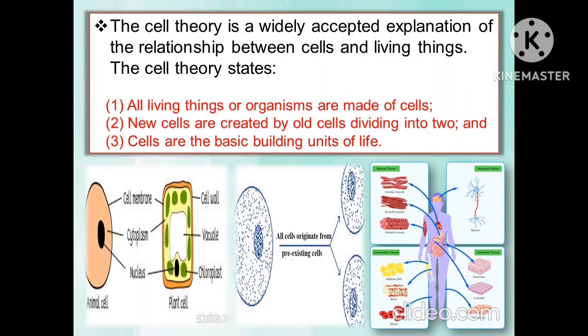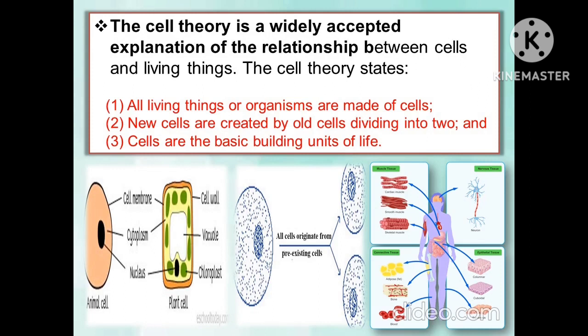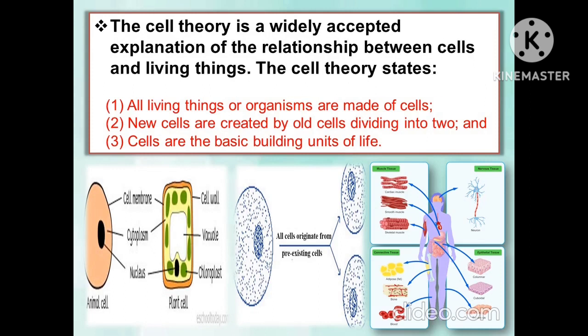The cell theory is a widely accepted explanation of the relationship between cells and living things. The cell theory states that all living things or organisms are made of cells. The second is that new cells are created by old cells dividing into two, and the last is that cells are the basic building units of life.